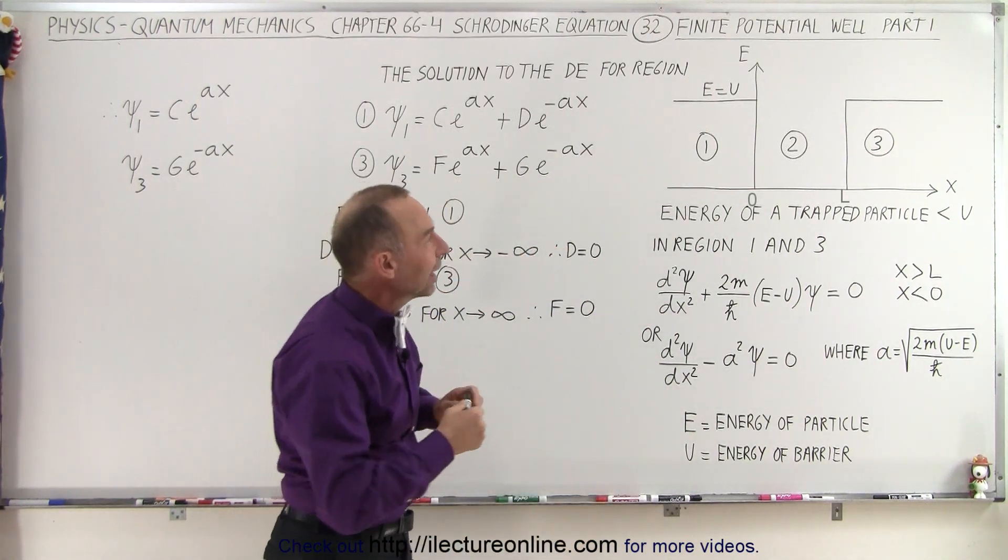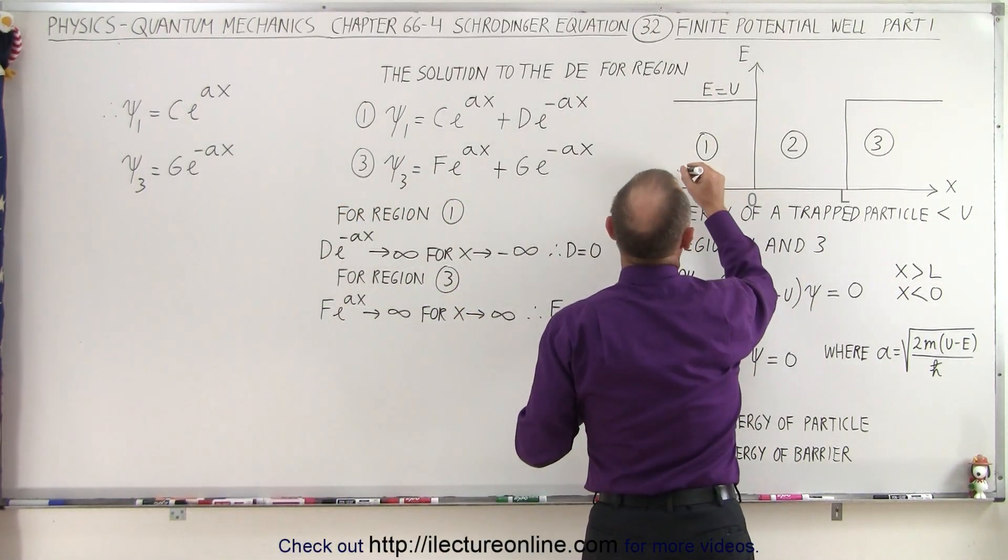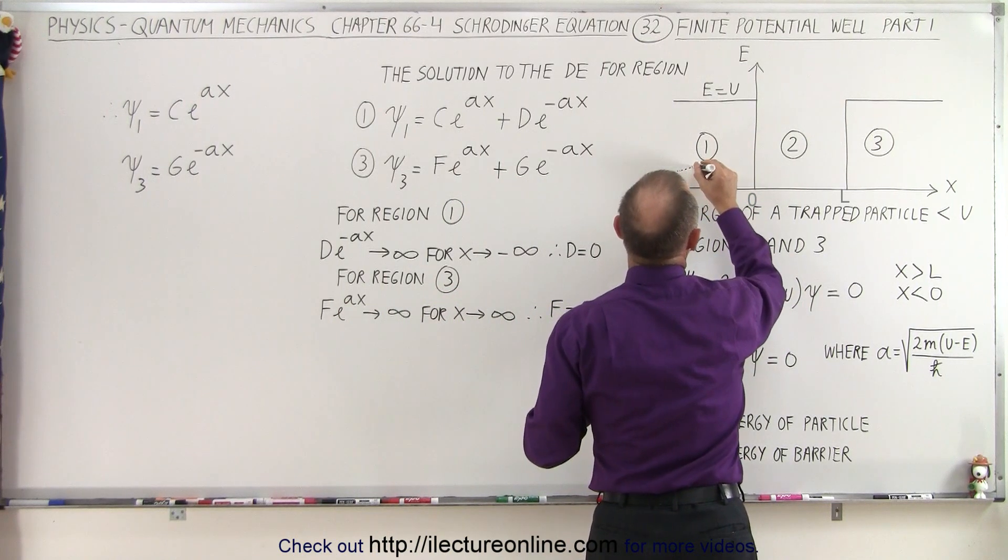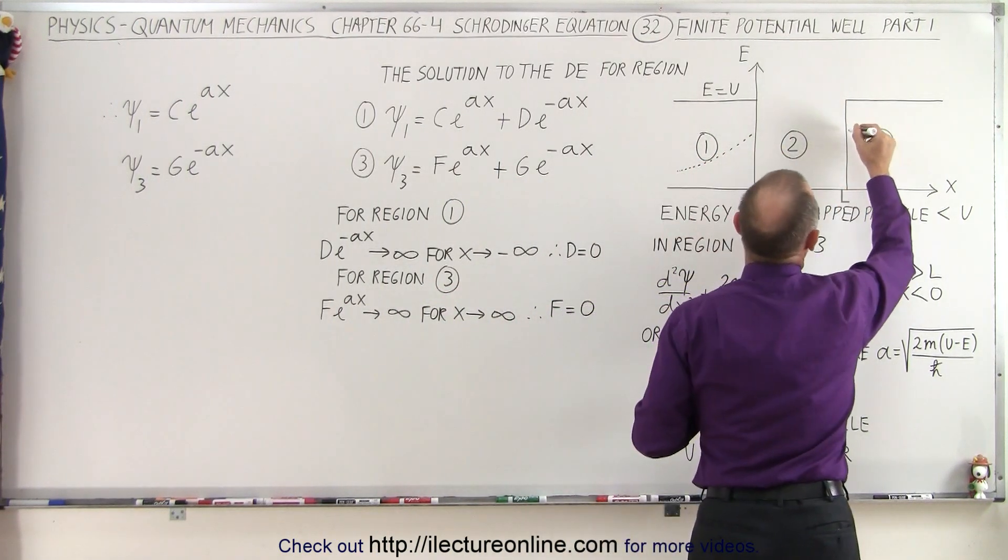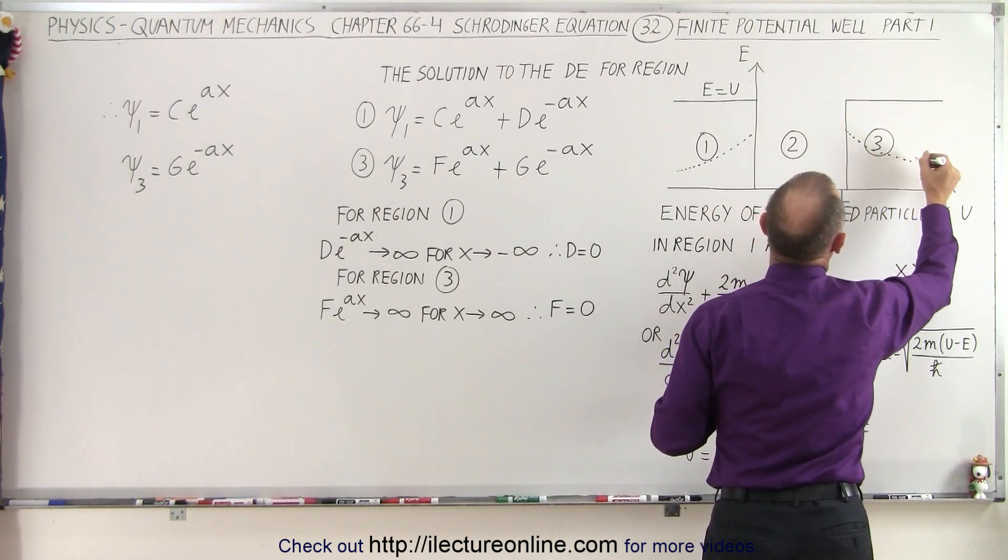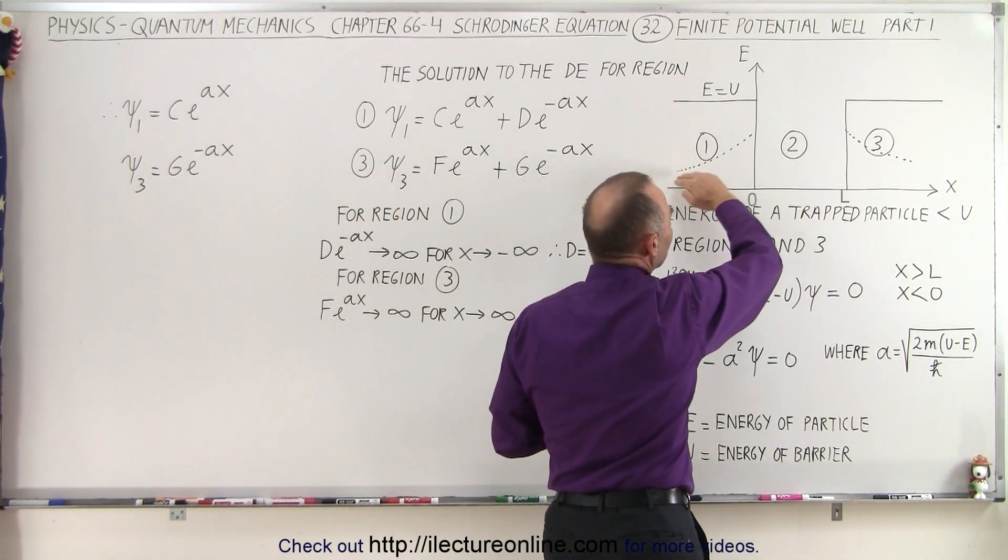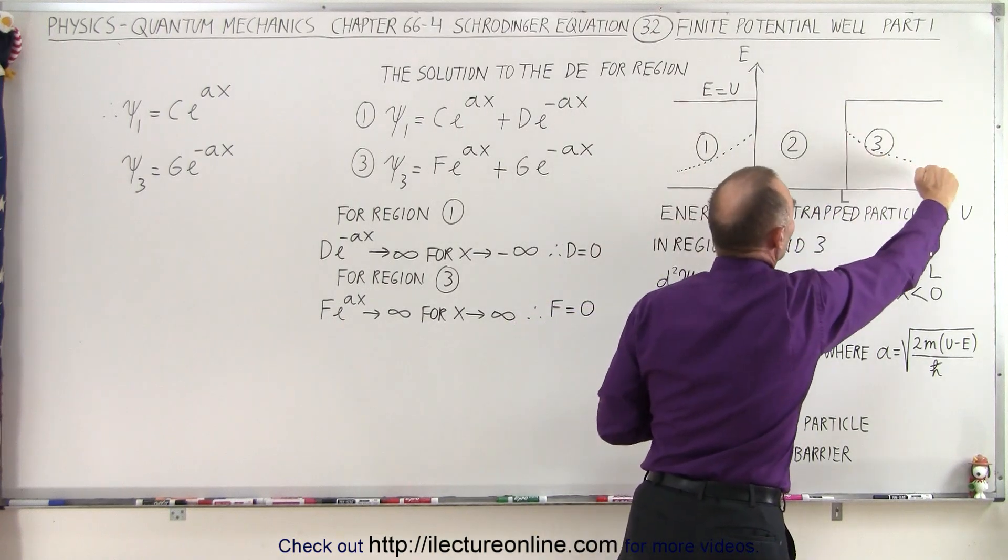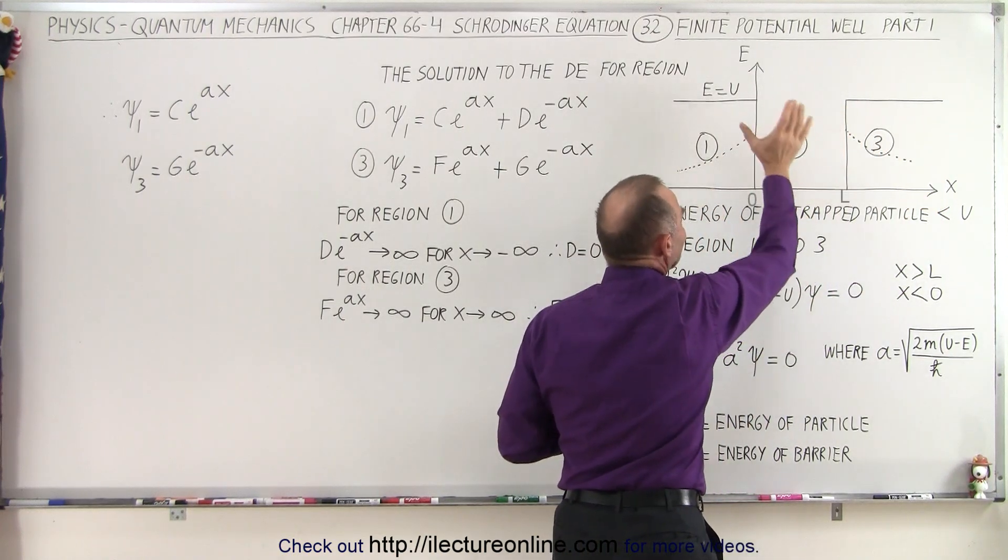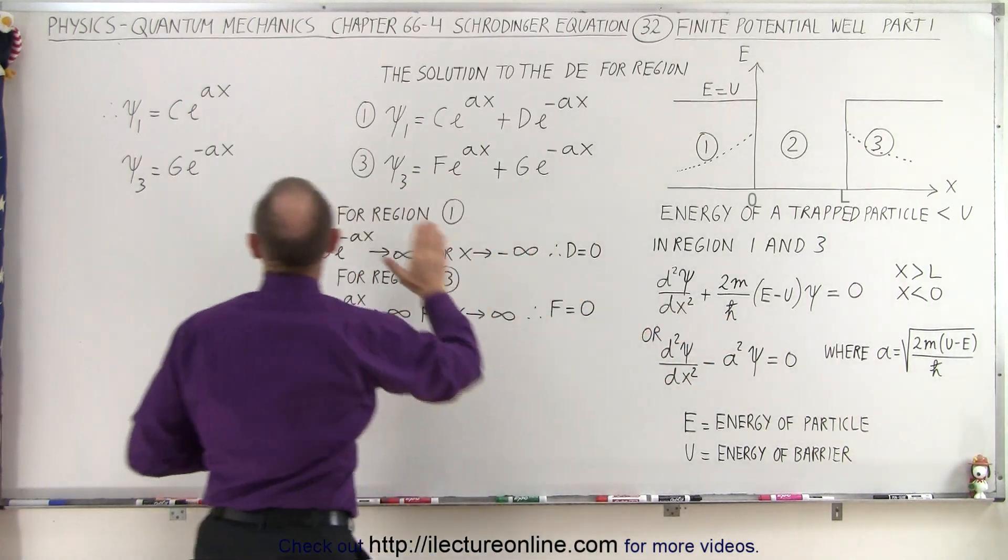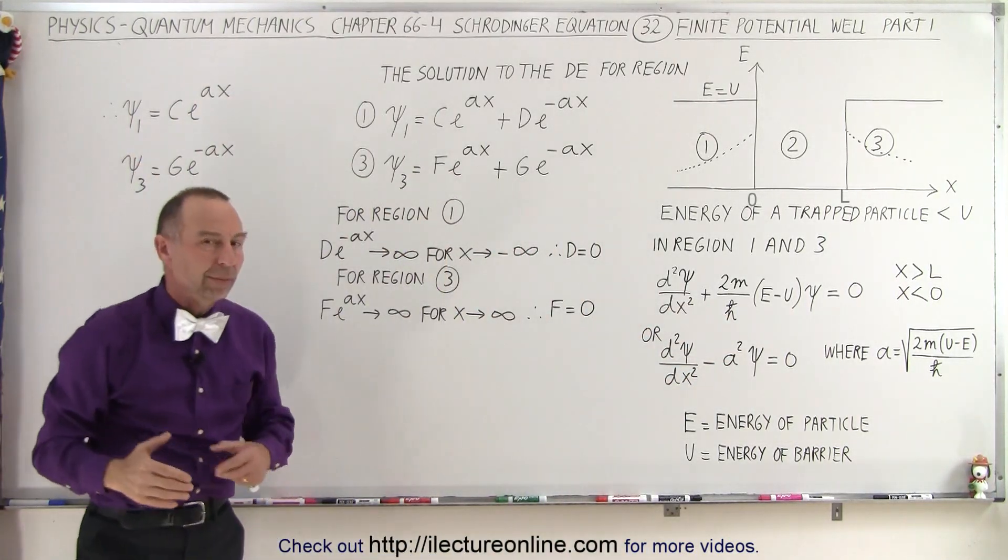And so what we're seeing then is that we have a solution that kind of looks like this in region 1, and a solution that kind of looks like this in region 3. In other words, the wave function tends to look like this in region 1 and tends to look like this in region 3 for a particle in a finite well, which is then defined by these two solutions for region 1 and region 3.